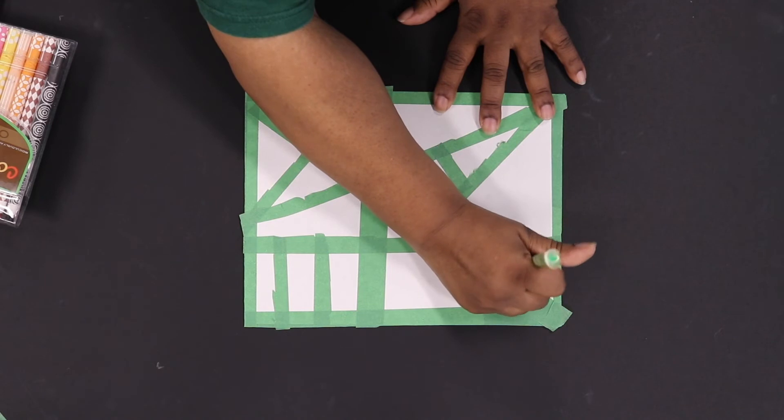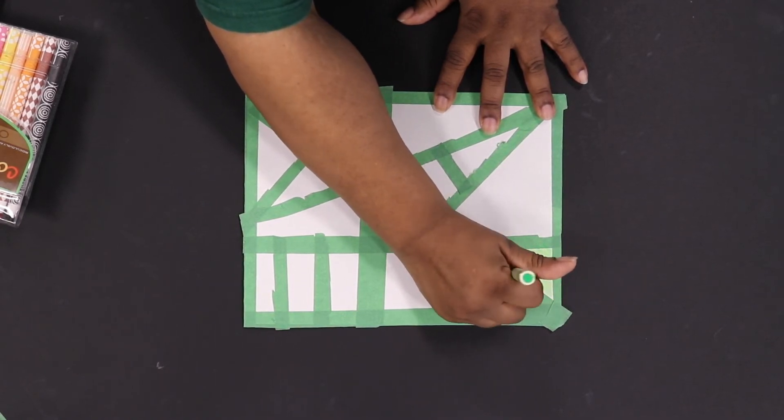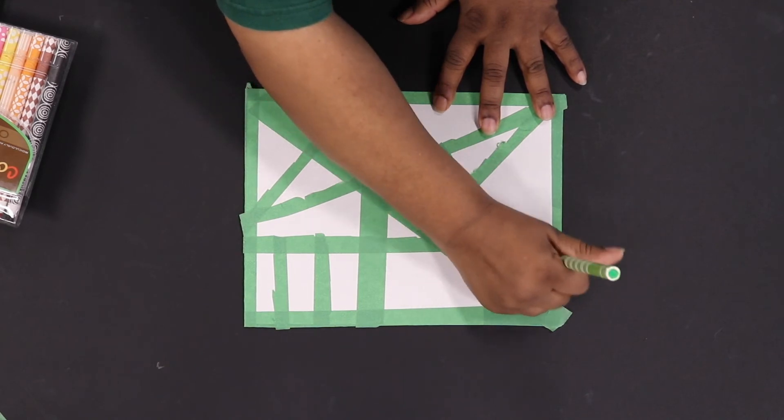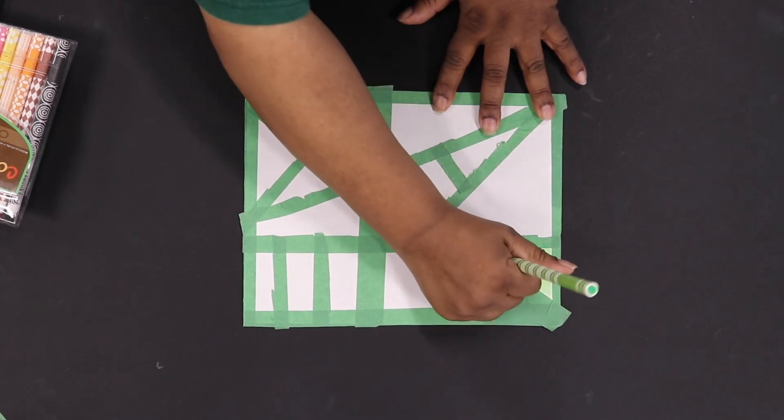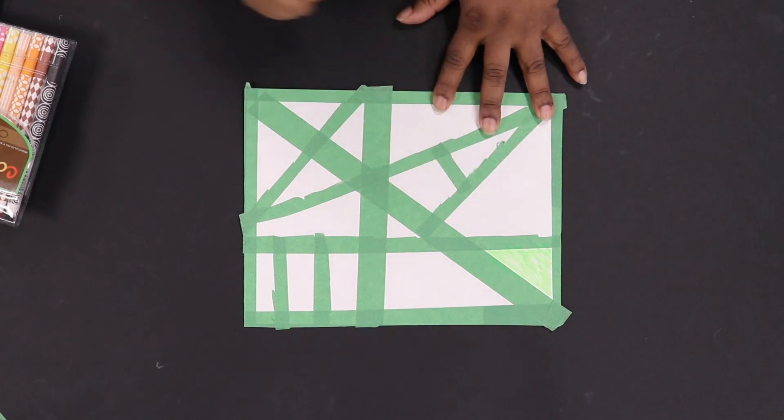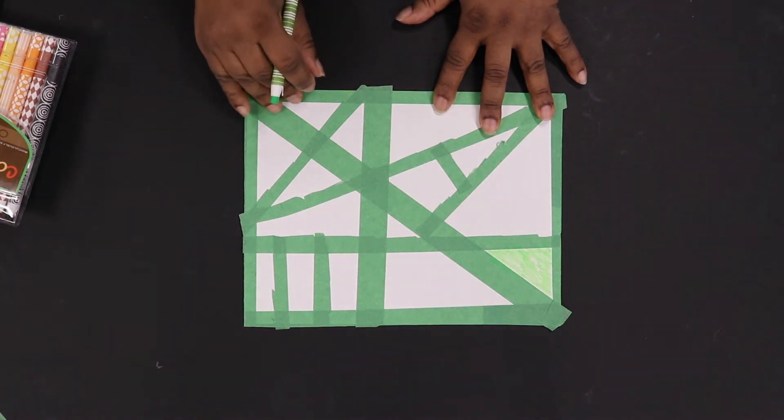Just want to make sure that you color up to the line, and it's okay if you go over the tape, because that will just peel right off. Now, let's see what you do with your colors.